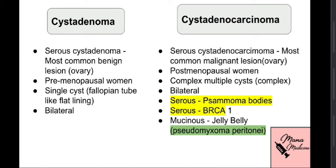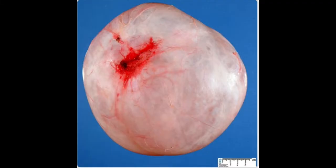Other tumors associated with BRCA1 mutation include breast cancer and fallopian tube cancer. For mucinous cyst adenocarcinoma, remember the formation of jelly belly — pseudomyxoma peritonei — the formation of gelatinous material in the peritoneum.